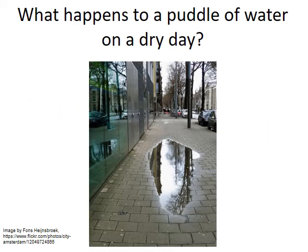Boiling is our common reference point for this phase change. However, vaporization can occur well below the boiling point of a liquid. Consider a puddle of water on a dry day — over time the puddle disappears, because the water evaporates, even though the air temperature is well below the boiling point of water. So how does this happen?